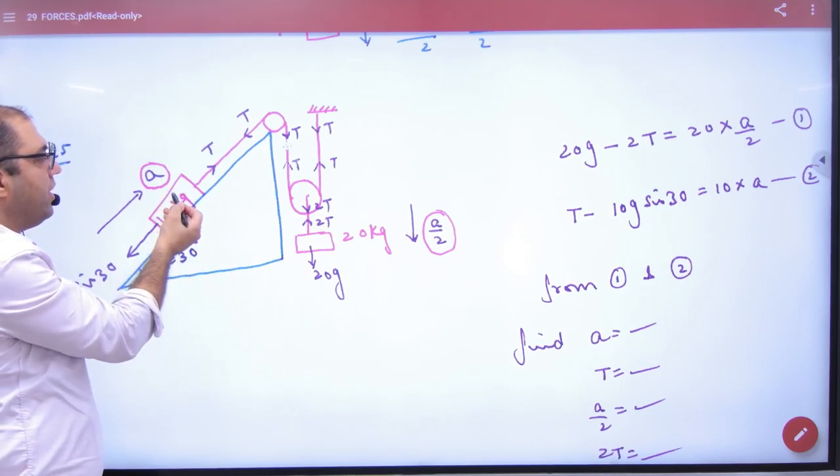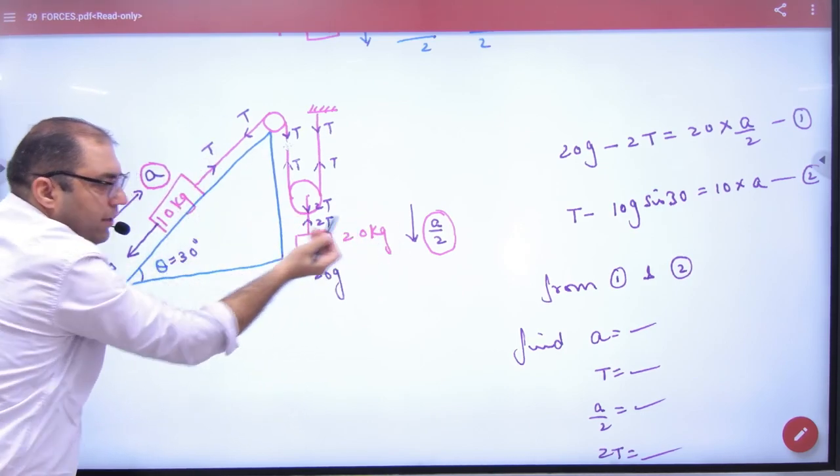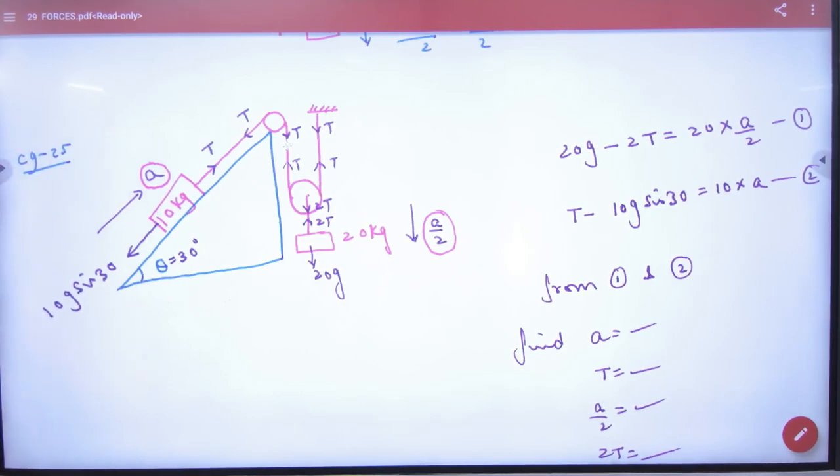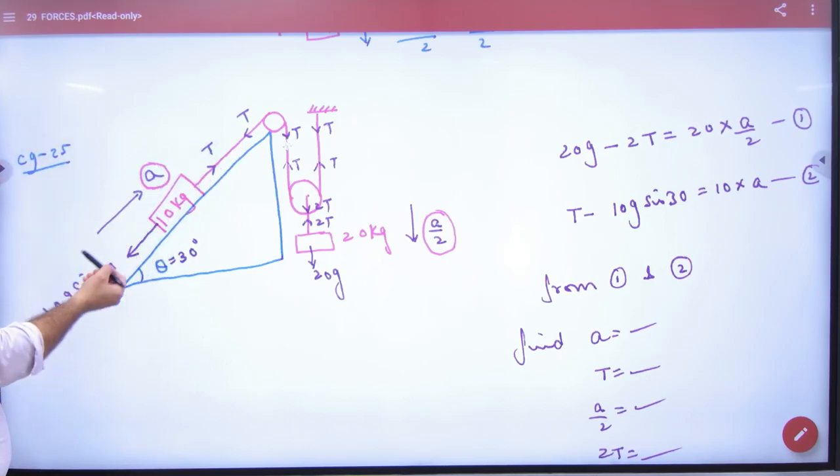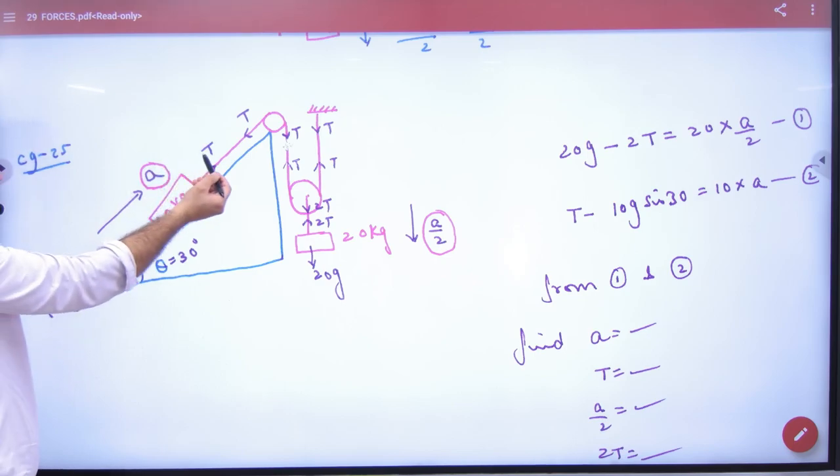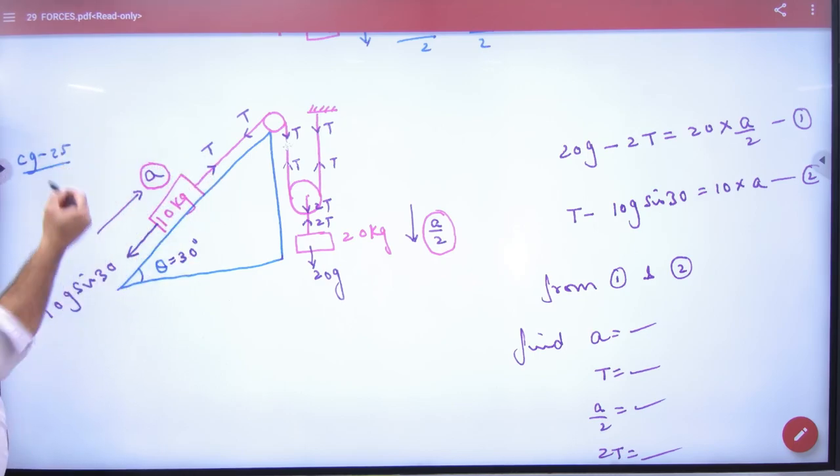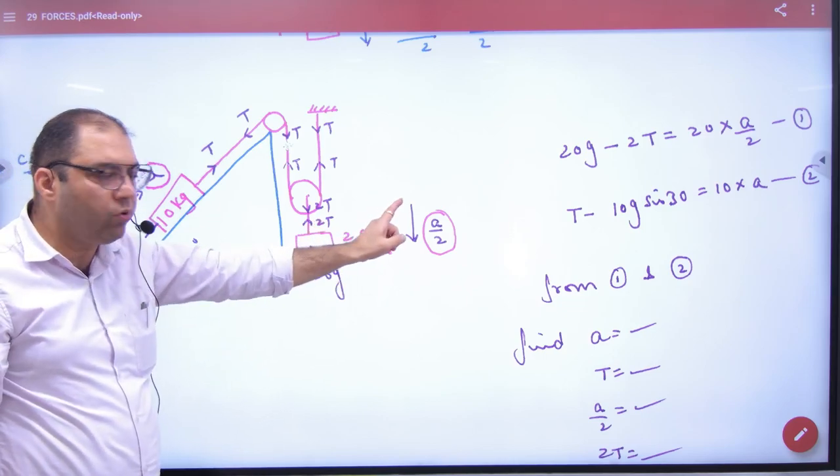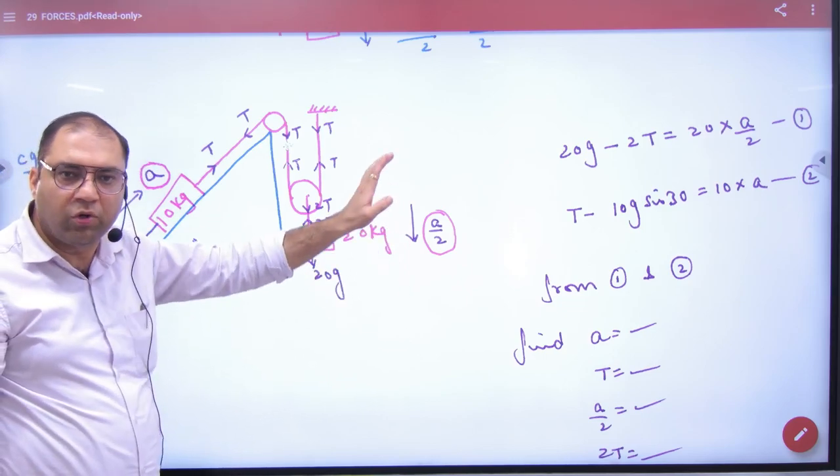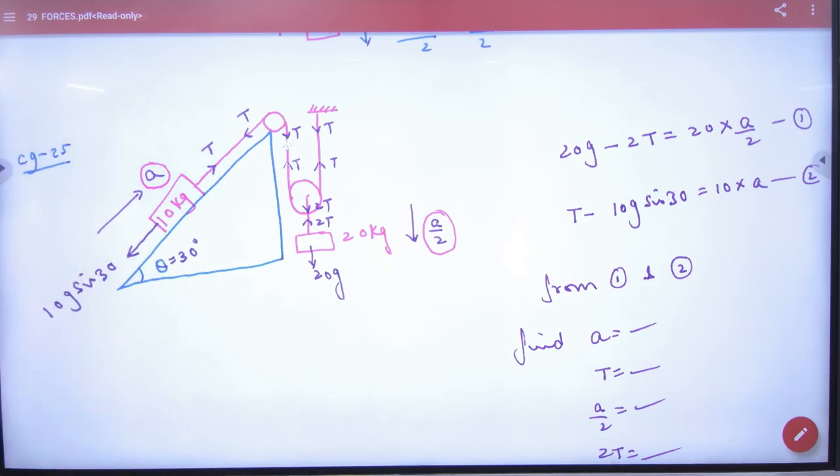So see, its acceleration is a and tension is T. Tension doubles, acceleration becomes half. Your own method - do it like this, or do a plus zero by two, no problem. Question is to find acceleration and tension. So its equation for going up will be T, because going up so T will be bigger and 10 G sin 30 will be smaller. So it will be T minus 10 G sin 30 is 10 into a, first equation. Okay. Its equation will be 20 G minus 2T is 20 into a by two. Solve these two to find a and T.